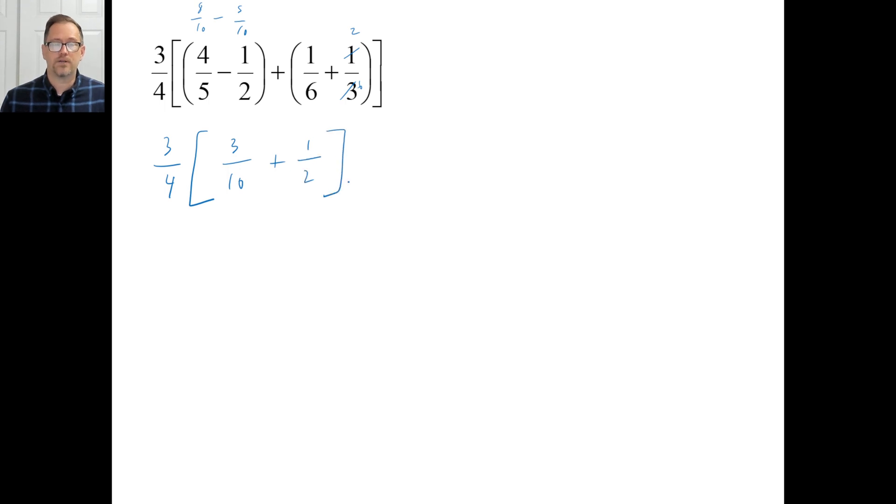Okay? That's a half. Now, if you want to go ahead and do this, we'll just do an extra step. This, as a common denominator, from ten and two would be ten, of course. So we would have three-tenths plus five-tenths, right? Okay. Three-tenths plus five-tenths is eight-tenths. And we can reduce that to four-fifths, right?